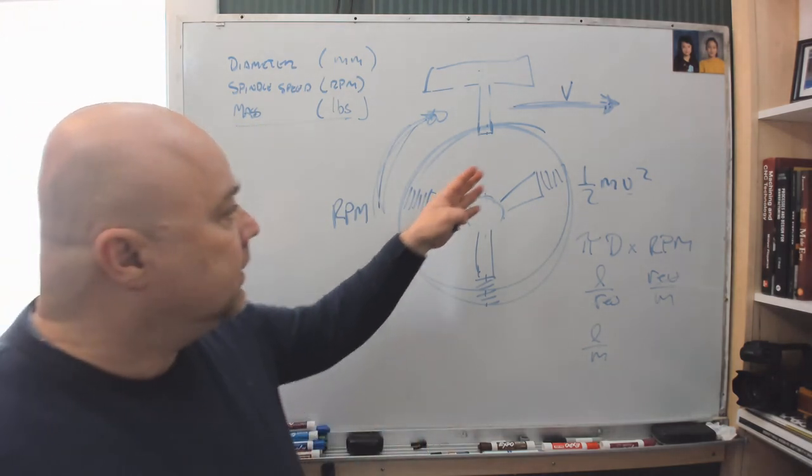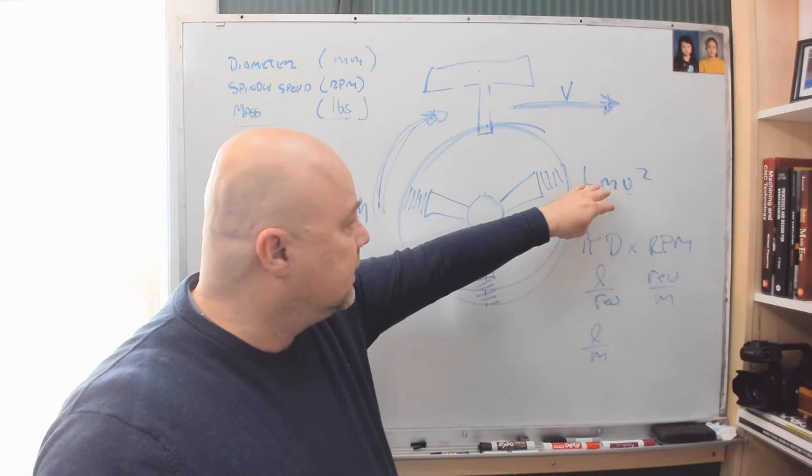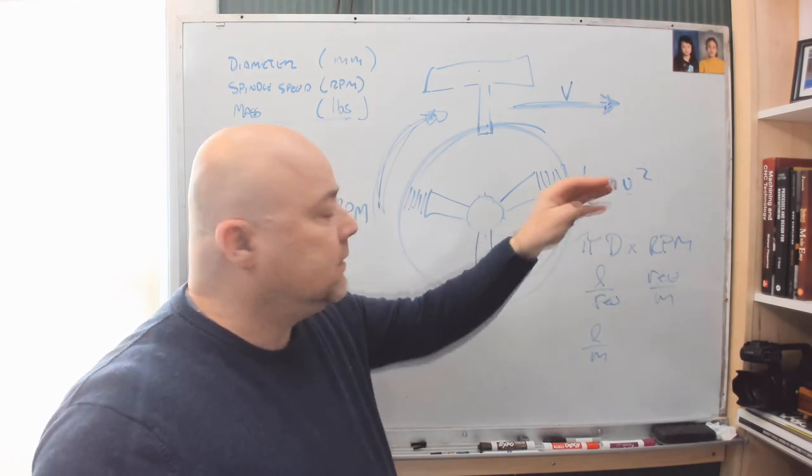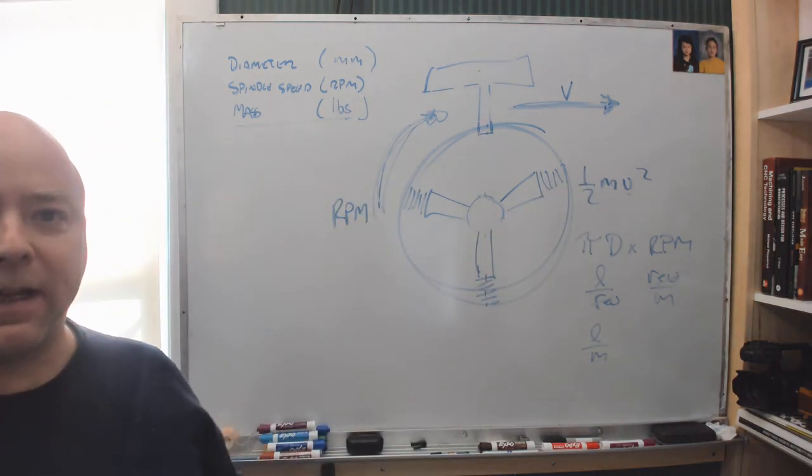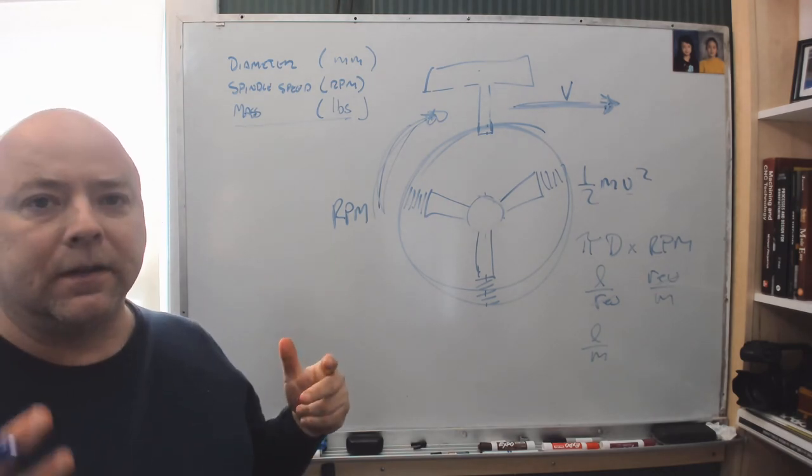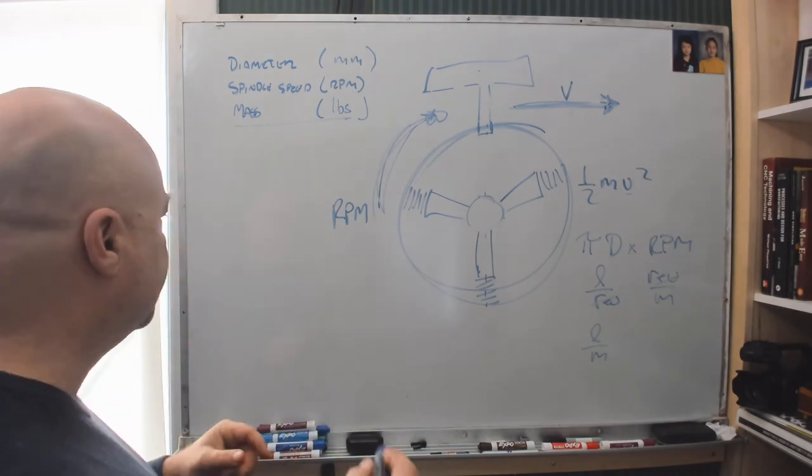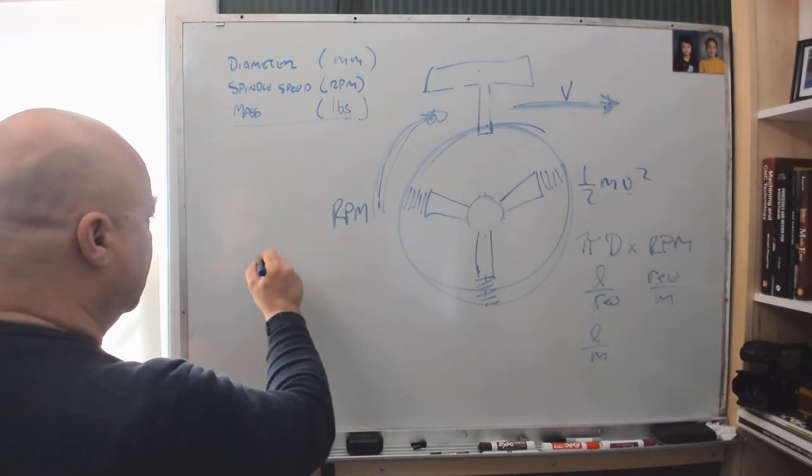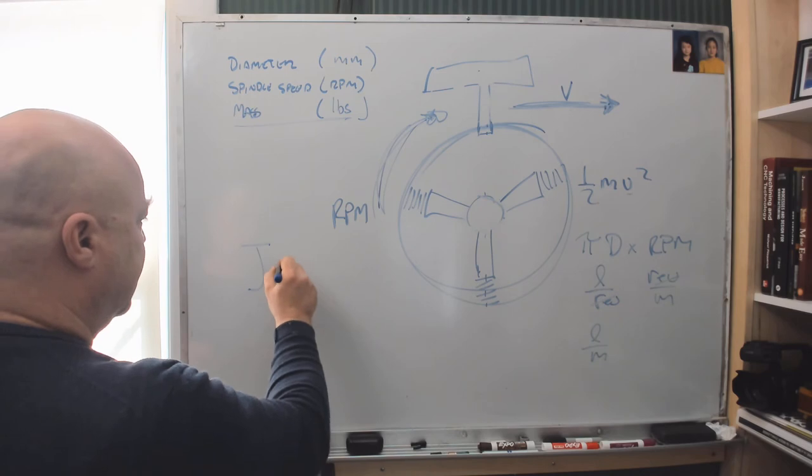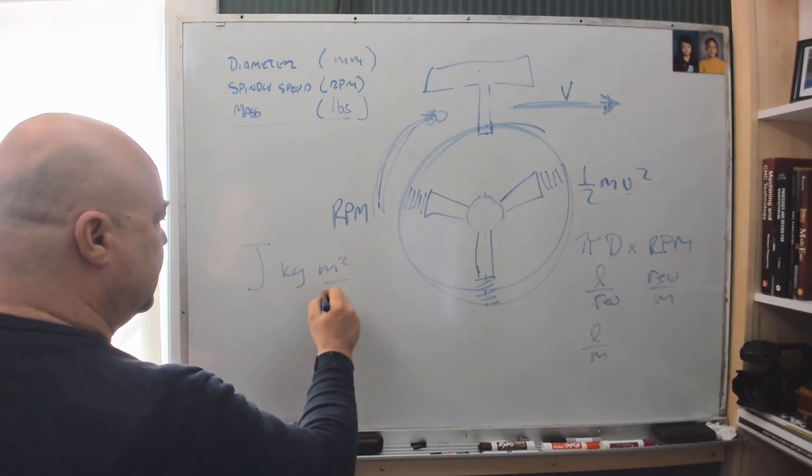And so this should give us our velocity squared, multiply by the mass, multiply by one-half, and that gives us kinetic energy. Except in what units? Now the question asks us to represent this in units of joules. And so what's a joule? A joule is a kilogram meters squared per second squared.